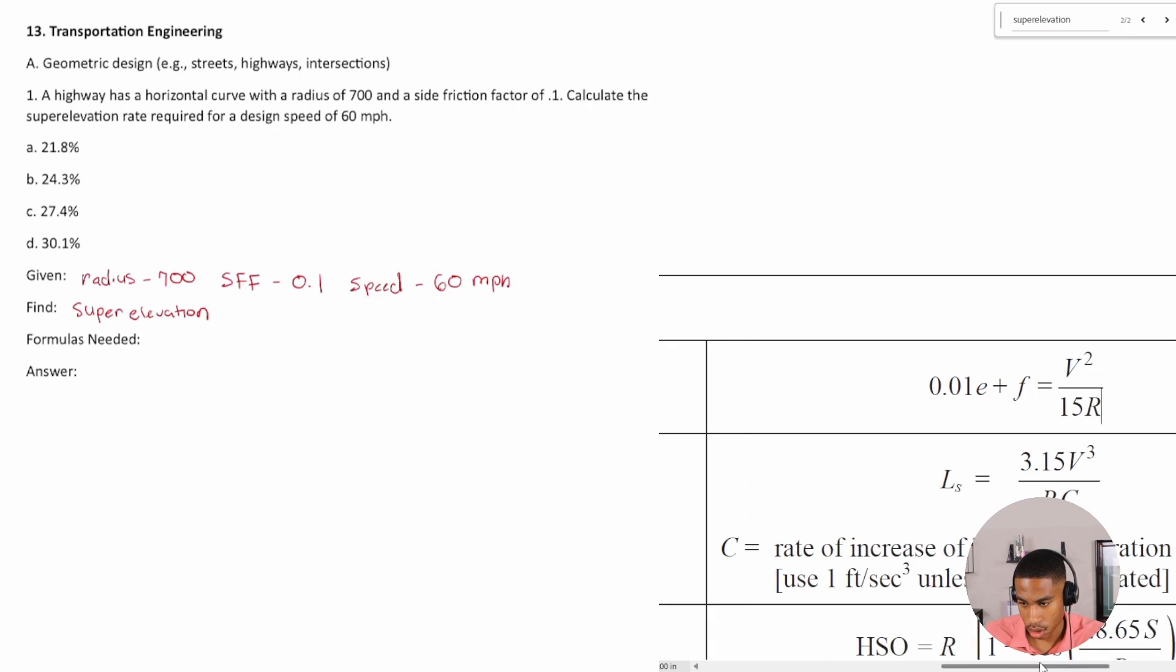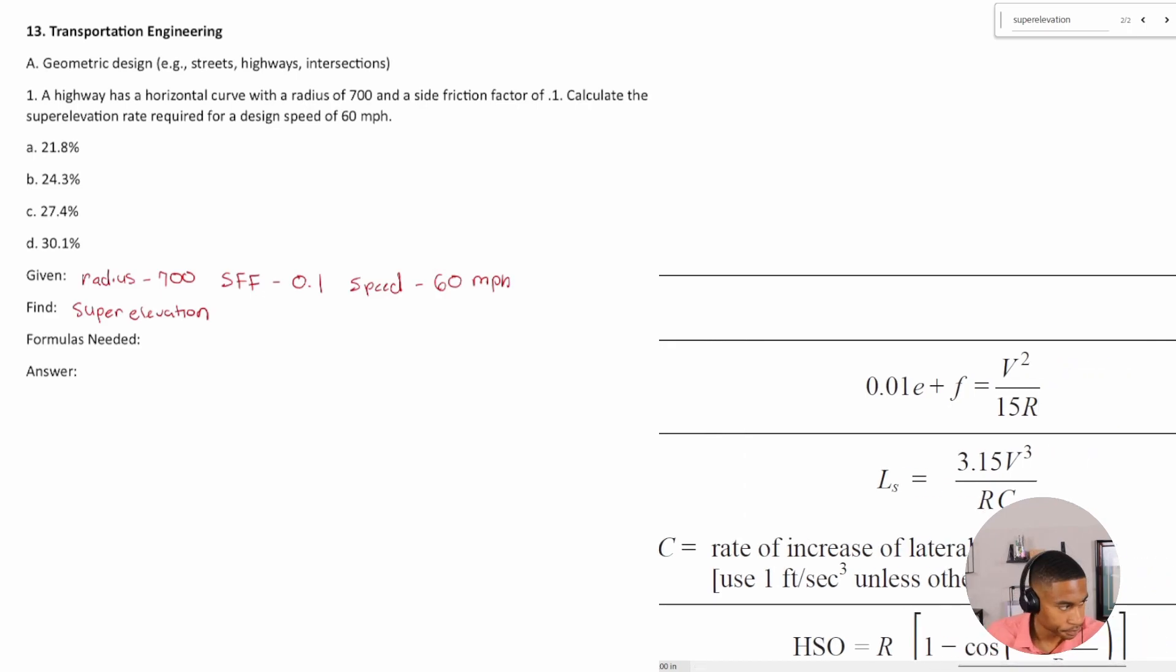Okay, so it's going to be 0.01E plus F, which is what? 0.1. All right, it's the side friction factor, and that's equal to 60 squared over 15 times 700.